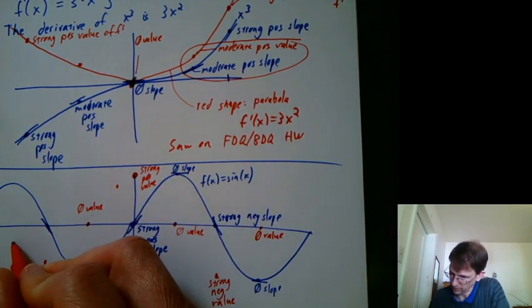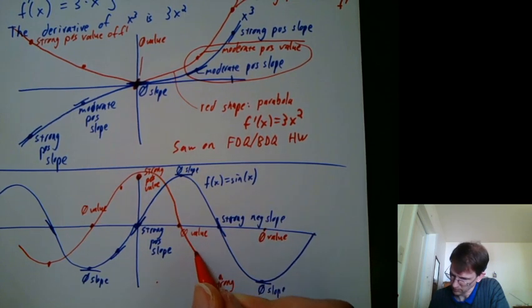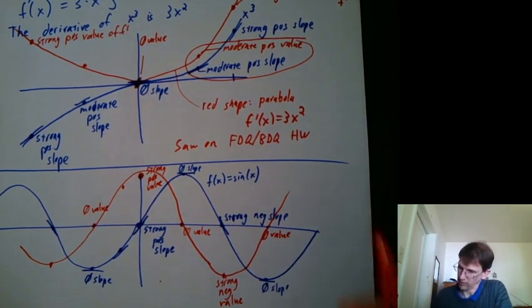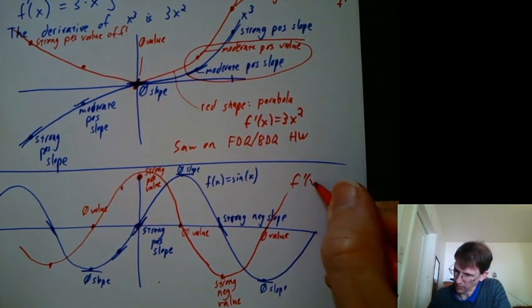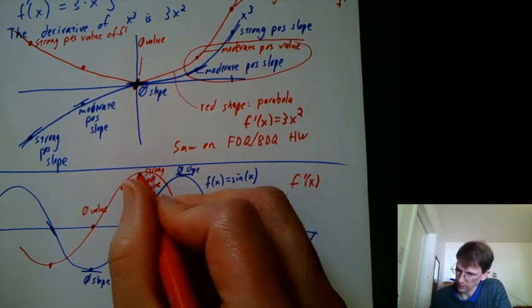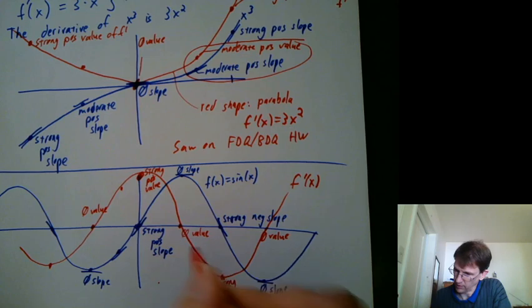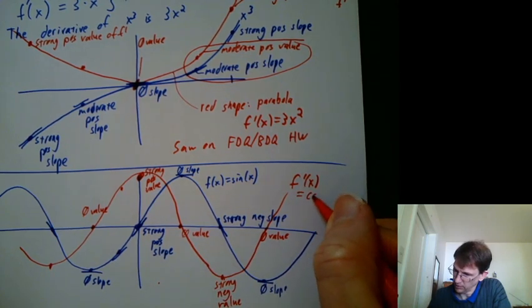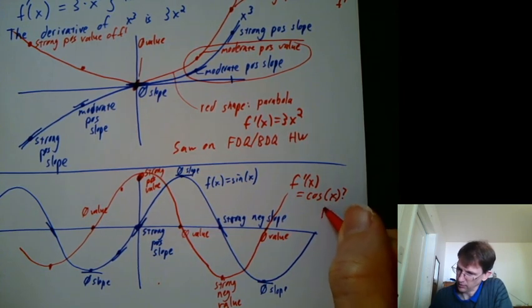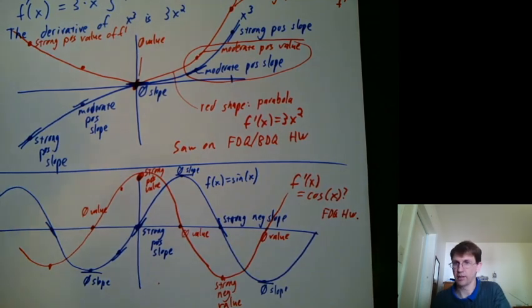And if I start connecting these, it's kind of a curved line. That is f prime of x. And what does that function look like? Well, to me, it looks like cosine, right? It starts high at x equals zero and starts moving downward. So it sure looks like cosine of x. And you saw it on the forward difference quotient homework. You probably said, hey, that looks a lot like cosine.